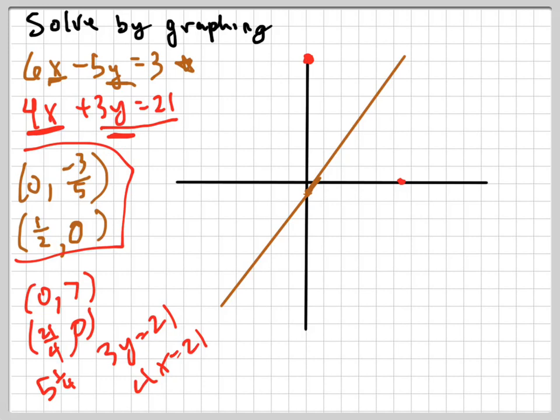And again, when you graph these, the problem with solving by graphing is you're not going to get an exact, it's hard to get the exact right solution when you're doing this. Now, it looks to me like they intersect roughly at 3 comma something.